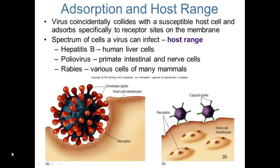Viral attachment to the host cell is coincidental — the virus collides with and adsorbs to receptor sites on a susceptible host cell. The spectrum of cells a virus can infect is called the host range. For example, hepatitis B has a host range limited only to human liver cells. Poliovirus has a broader host range, infecting primate intestinal cells and nerve cells. Rabies can infect various cells of many different mammals, giving it a much broader host range than hepatitis B.